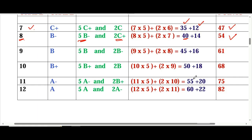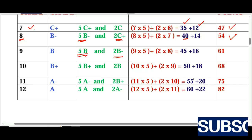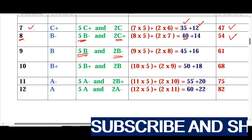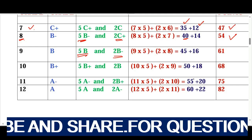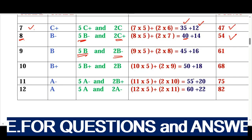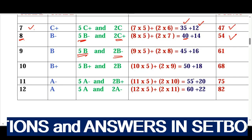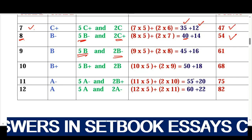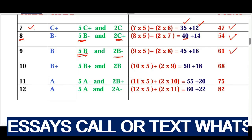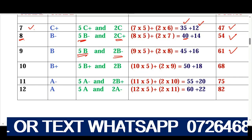If your goal is to get a B plain, you must balance your subjects such that you will have five B plus and two B minus. B plain has nine points, so 9 times 5 equals 45. B minus has eight points: 8 times 2 equals 16. In total you will have 61 points and you will go to university to do what you want.